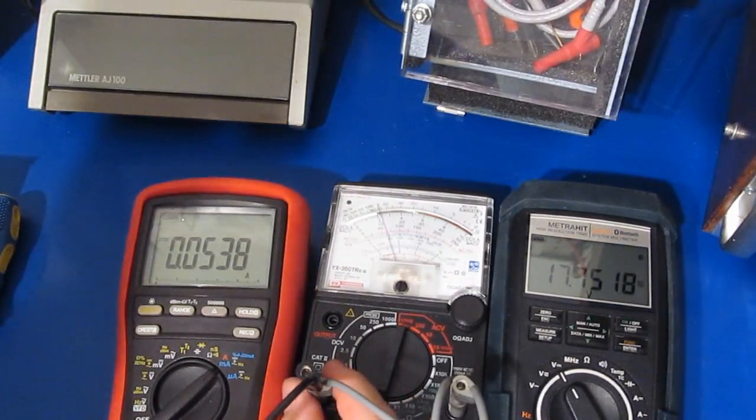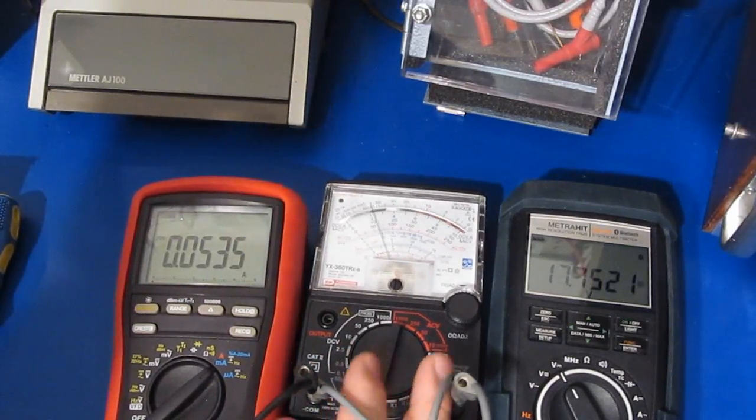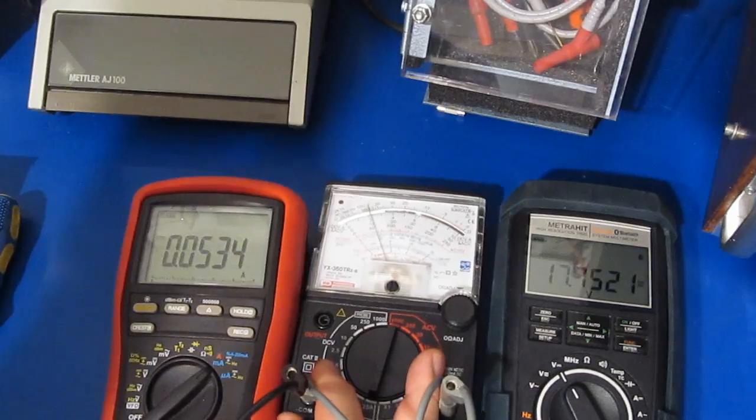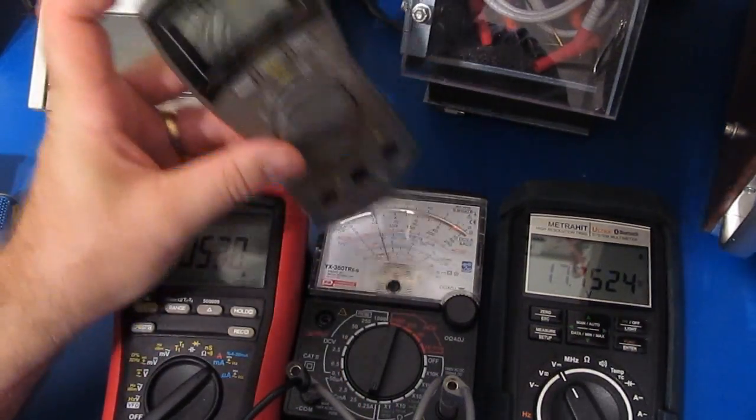And I've actually seen on some of the cheaper meters I've looked at where they'll use a PTC rather than a fuse. And I can certainly see that for low voltage work. If you're working on automotive stuff for example, and you're only working around 12 volts.